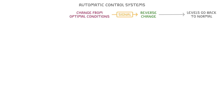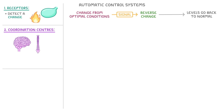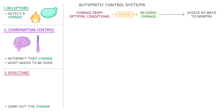Automatic control systems have three main components to know about. Receptors, which detect a change such as a rise in temperature. Coordination centres, such as the brain or spinal cord, which interpret that change and decide what needs to be done about it. And finally, effectors, which are the things that carry out the change — generally these are either muscles that might contract, or glands that can release hormones.